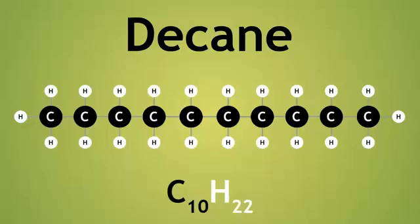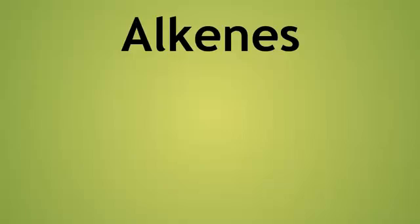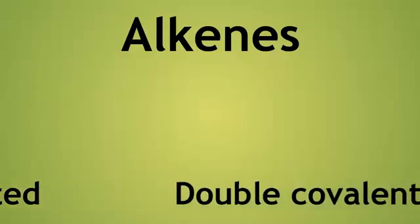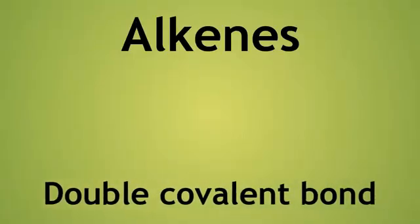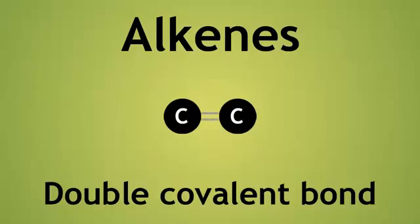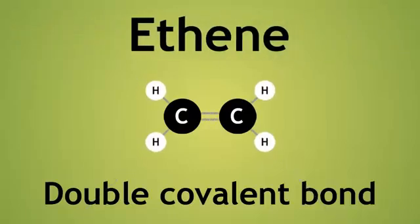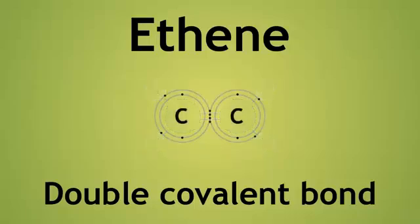Let us look now at the homologous series of the alkenes. These are unsaturated, and so contain a double covalent bond between two carbon atoms. Here is ethene. Since there is a double bond, there are now two shared pair of electrons between the two carbon atoms.